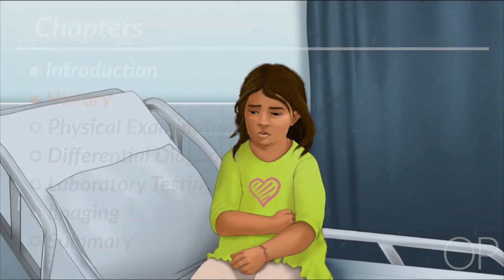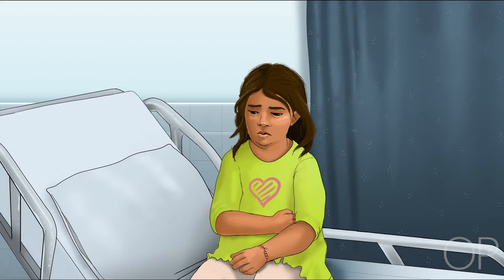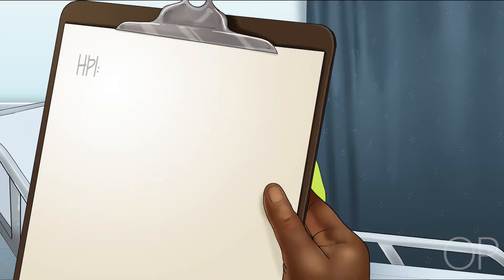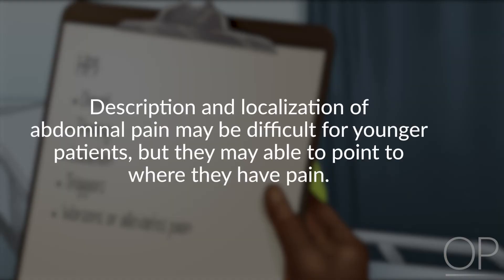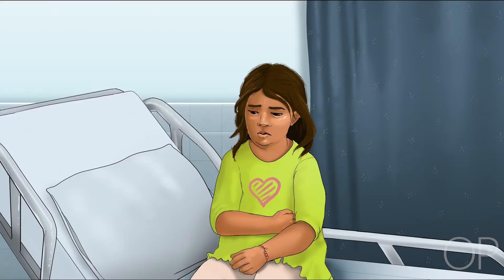Correct diagnosis of abdominal pain relies on accurate medical history. A detailed history will investigate for red flags and help identify the cause of pain. Like other pain conditions, initial interviews should include onset and timing, location, obvious triggers, and what worsens or alleviates the pain. Description and localization of abdominal pain may be difficult for younger patients, but they may be able to point to where they have the pain. Other symptoms associated with the abdominal pain may help distinguish causes.